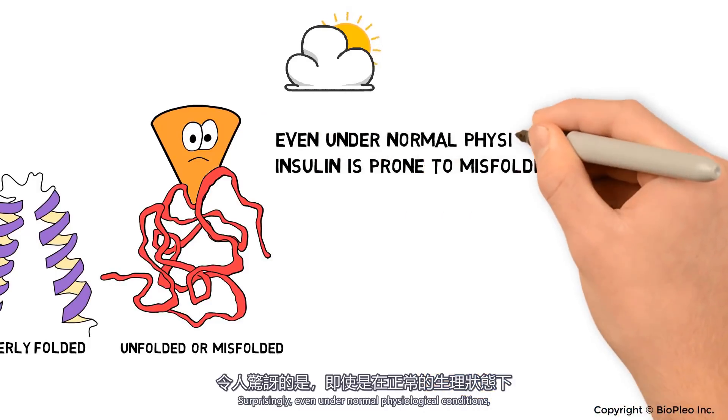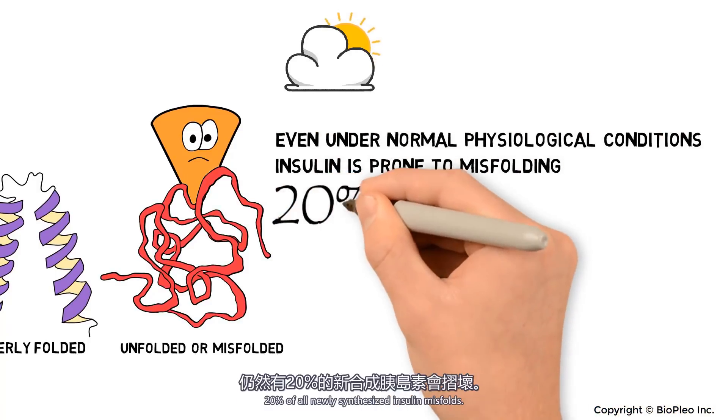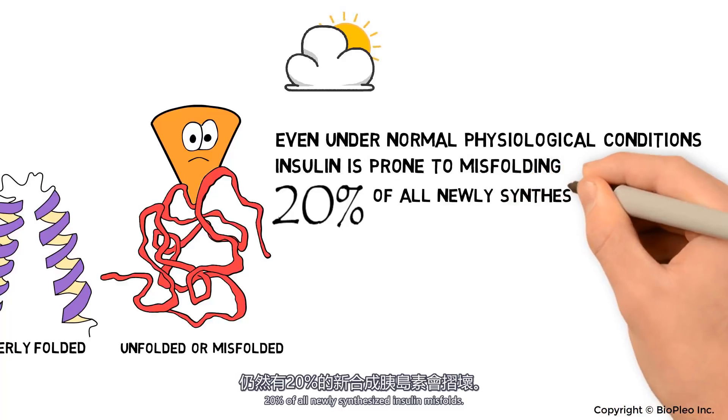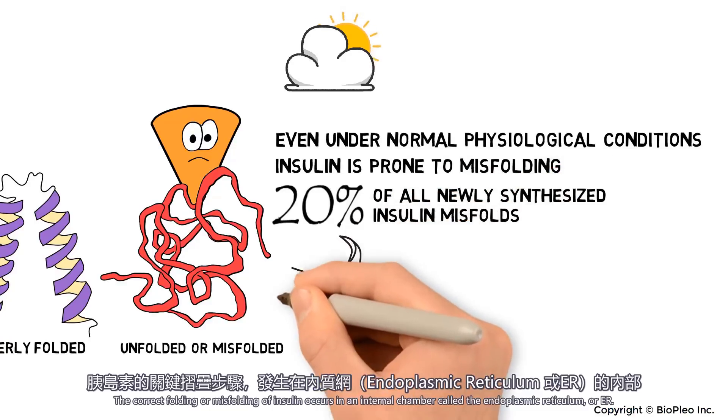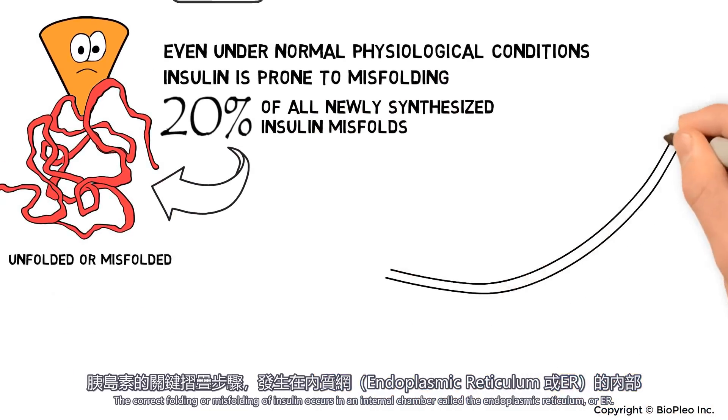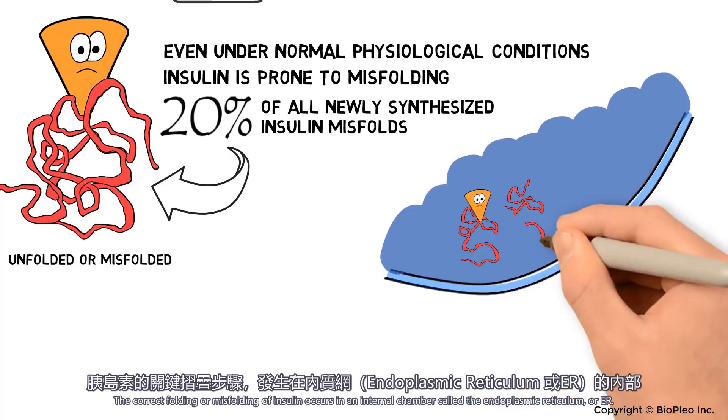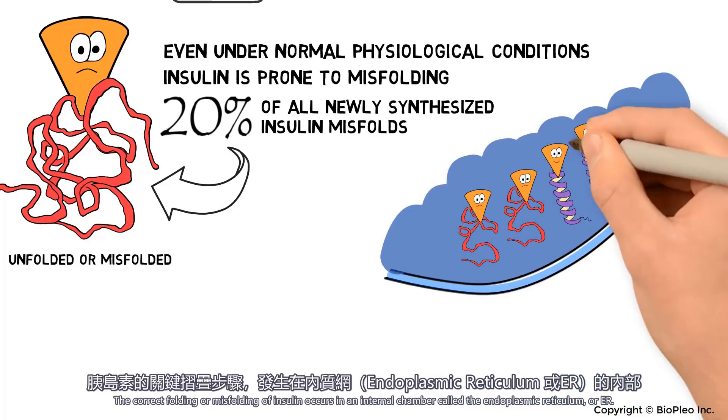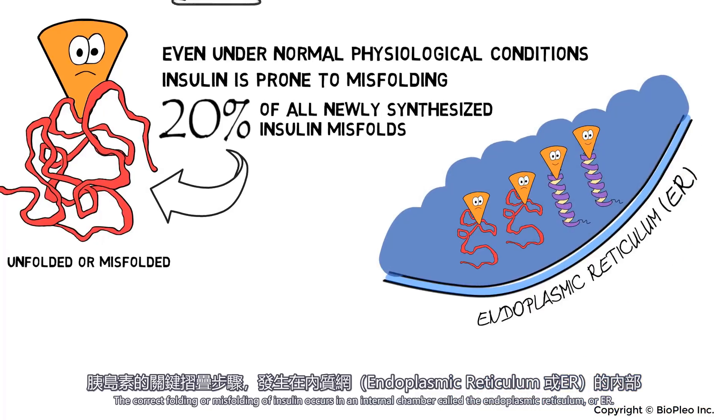Surprisingly, even under normal physiological conditions, 20% of all newly synthesized insulin misfolds. The correct folding or misfolding of insulin occurs in an internal chamber called the endoplasmic reticulum, or ER.